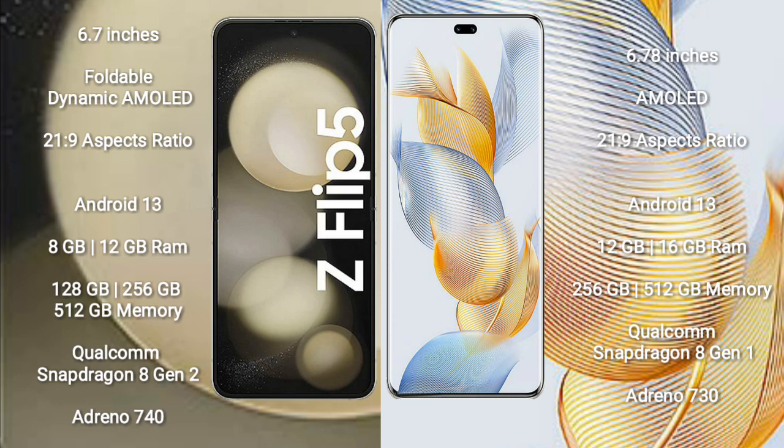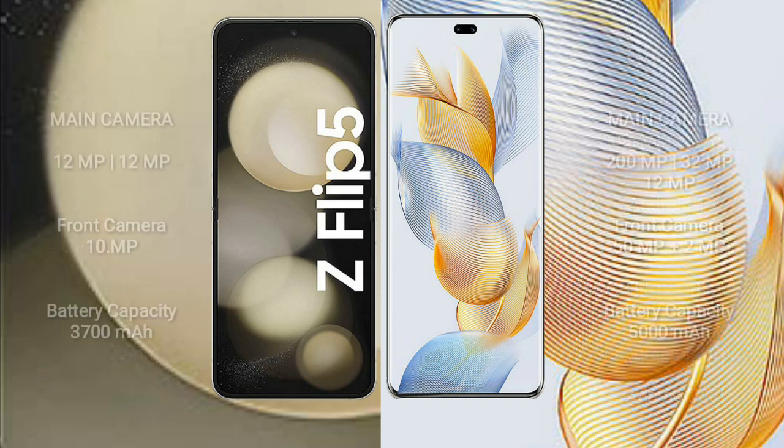Honor 90 Pro comes with 12GB or 16GB RAM and 256GB or 512GB internal storage. It is powered by a Qualcomm Snapdragon 8 Gen 1 processor with an Adreno 730 GPU. Samsung Galaxy Z Flip 5 features a dual rear camera setup with 12MP plus 12MP, and a 10MP front camera.